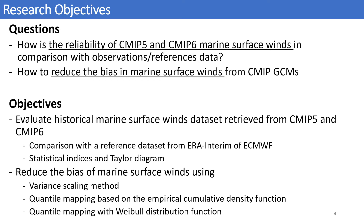Therefore, we have some questions: how reliable are the CMIP-5 and CMIP-6 marine surface winds compared to a reference surface wind? Most previous literature uses CMIP-5 marine surface wind as external forcing, so we want to investigate that. We also tried to investigate the biases in the marine surface wind and how to reduce them. The objective of this study is to evaluate the historical marine surface wind from CMIP-5 by comparing it with the ERA-Interim reanalysis reference dataset, and to apply three bias correction methods to reduce those biases.